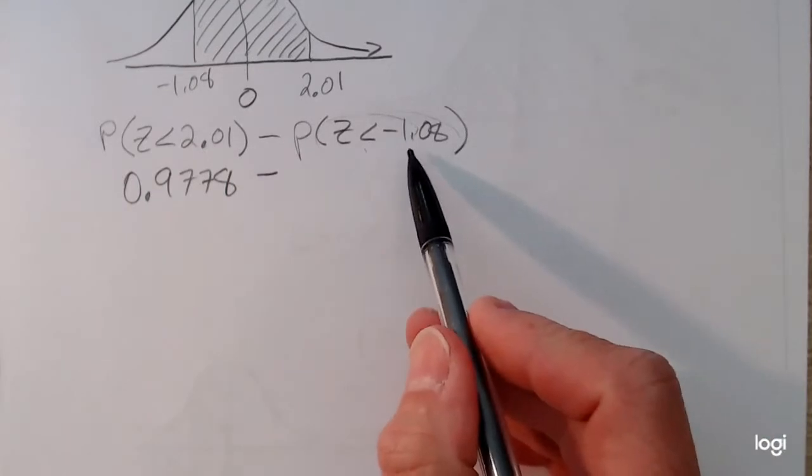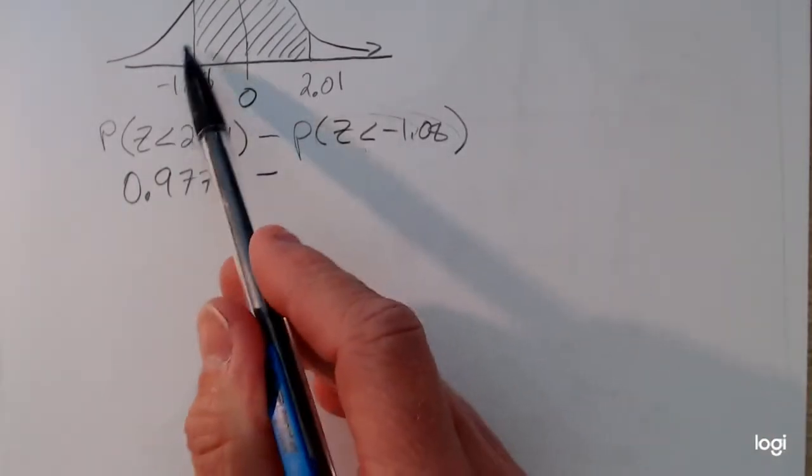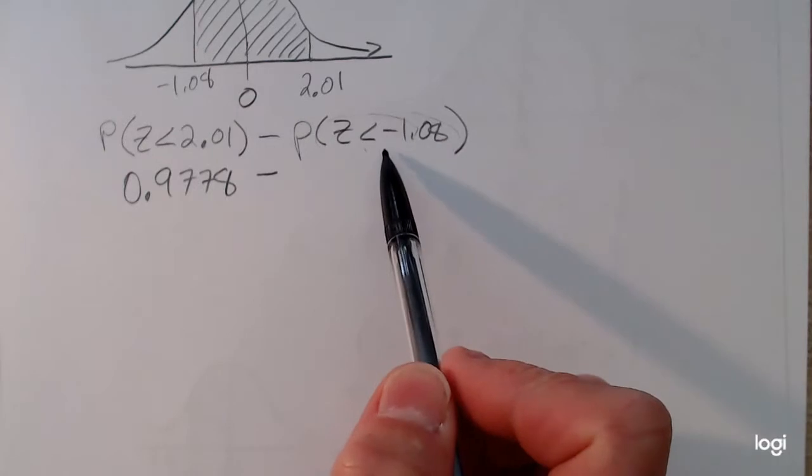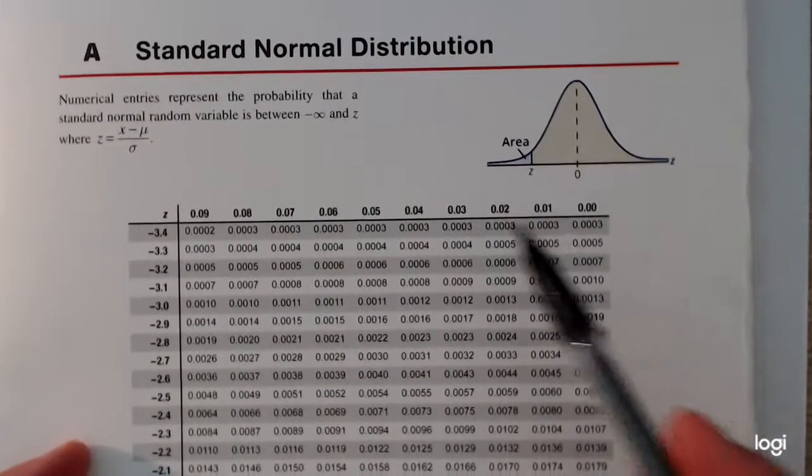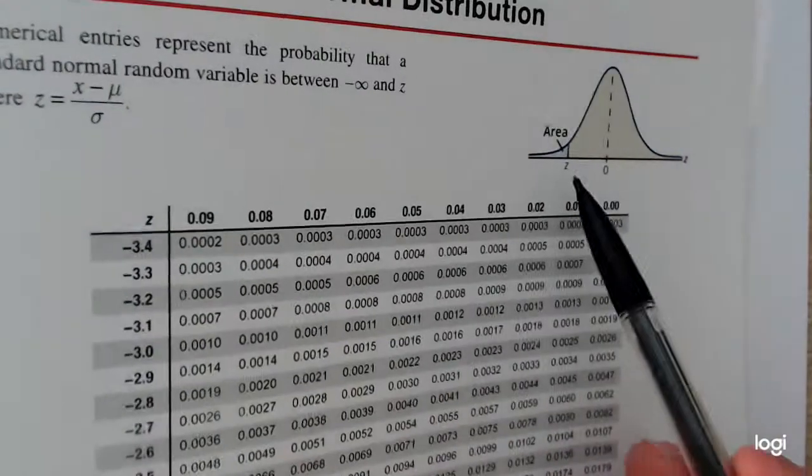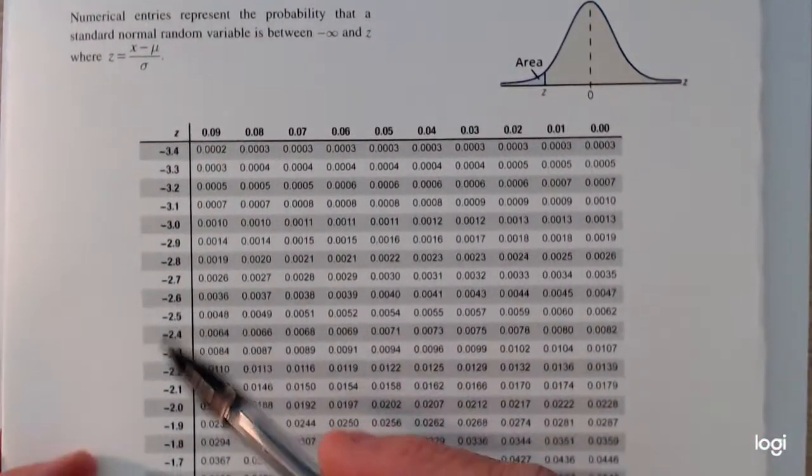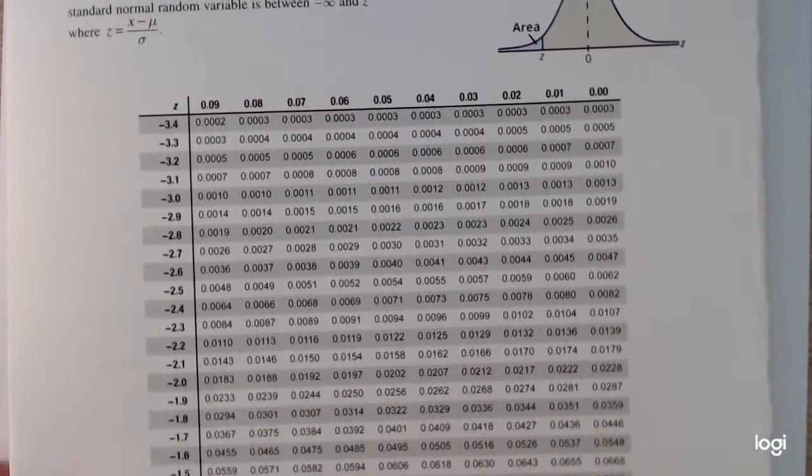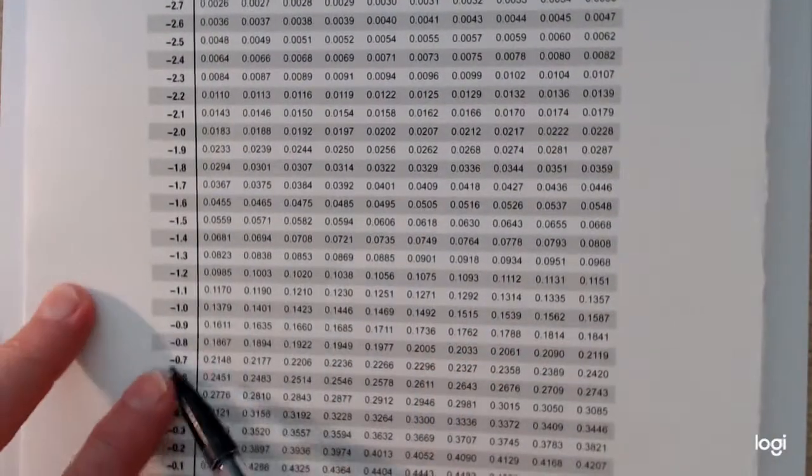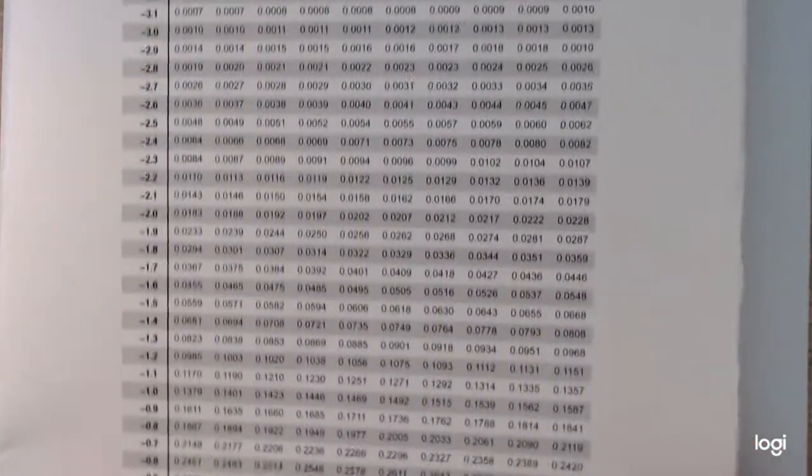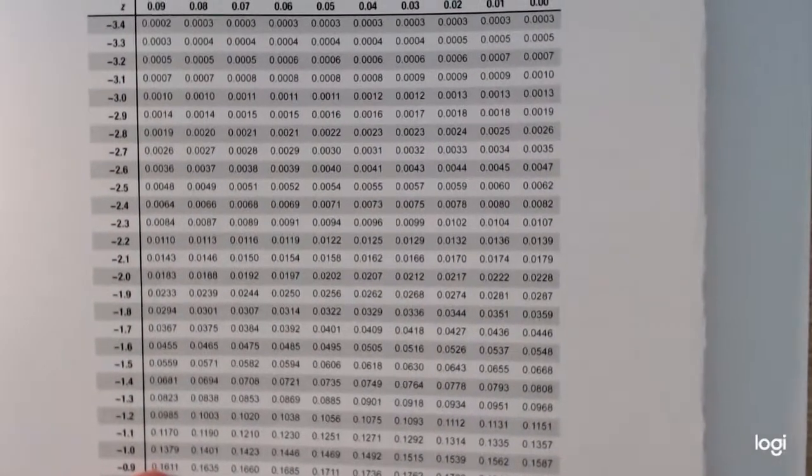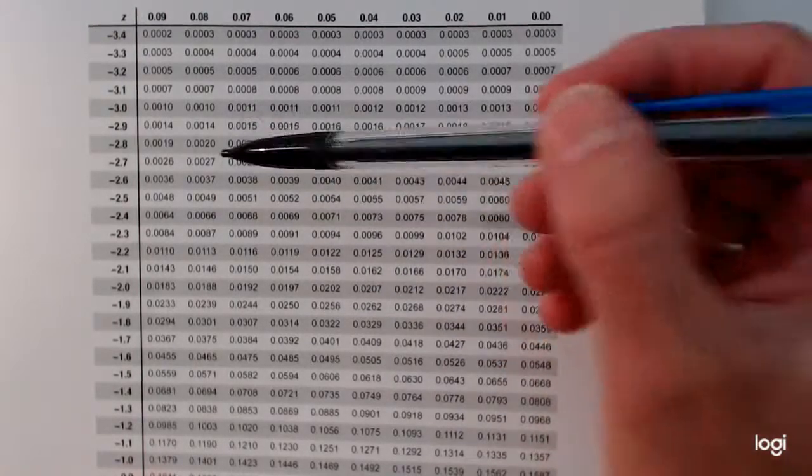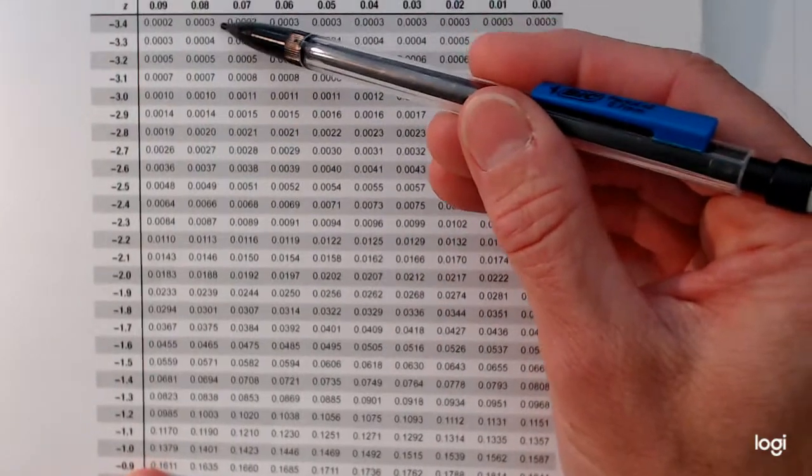And I want to subtract out the smaller tail here, the area that corresponds to the left of negative 1.08. So I need to go to the page that corresponds to negative z-scores. And I want to go down to negative 1.0, oops, negative 1.0 and over to 0.08. Okay, I know this table is a little tricky to read. I need a large font table.